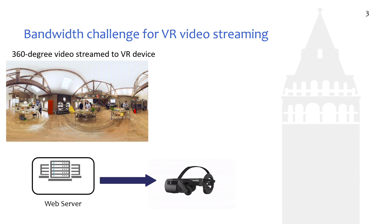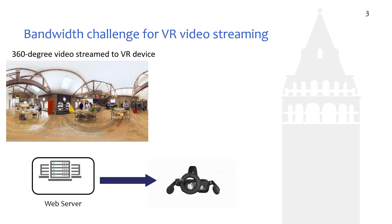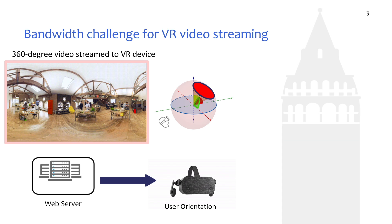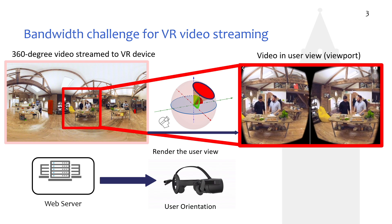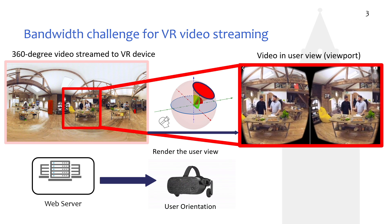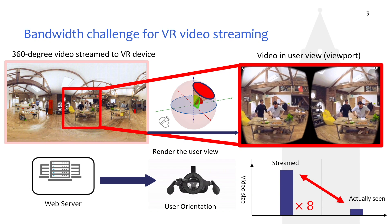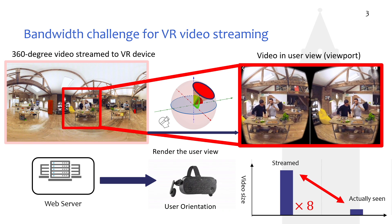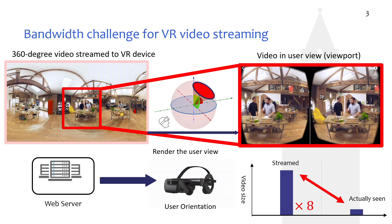In the VR video streaming system, the server first streams the panoramic video to the user's head mount device, within which the panoramic video will be projected to a sphere. Then, the head mount device will collect the sensor data to calculate the orientation of the user's head, based on which they will render the 2D video for the user to watch. As we can see by comparing the two videos, the user only watches a subset of the original video. This scaling factor could be as high as 8, which means it takes more bandwidth than the traditional 2D video.